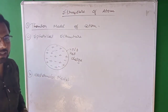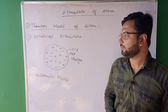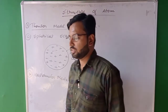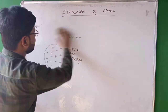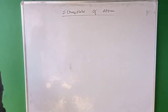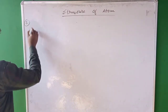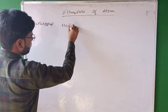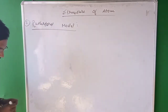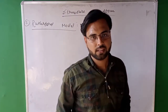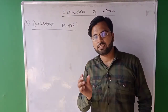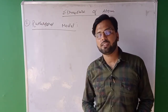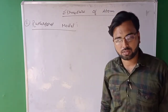Thomson model was not accepted, and another important model was introduced — that is called Rutherford model of atom. Rutherford proposed that the structure of atom is like a small-scale solar system, in which the positive charges are situated at the center of the atom and negative charges revolve around the center.